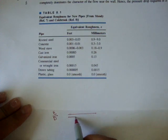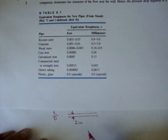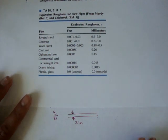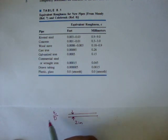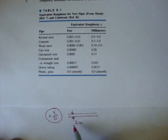So if you had a pipe, let's say this was a pipe, and it had a certain diameter, 2 inches, we can find the relative roughness by using this formula. The relative roughness is equal to epsilon over the diameter of this pipe.